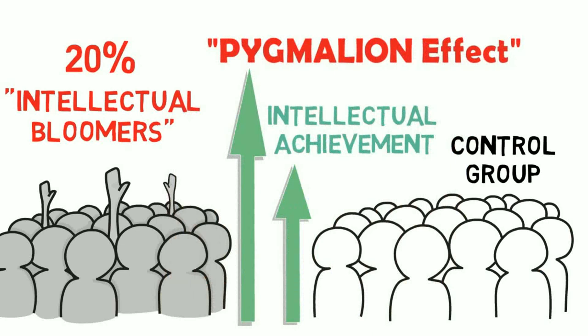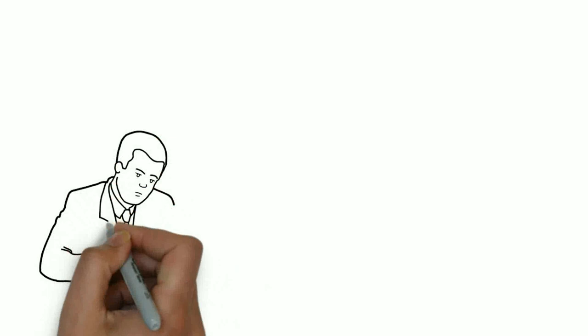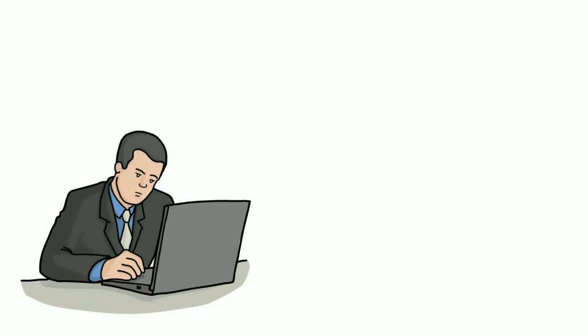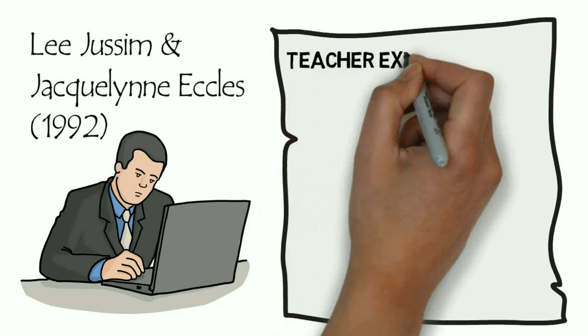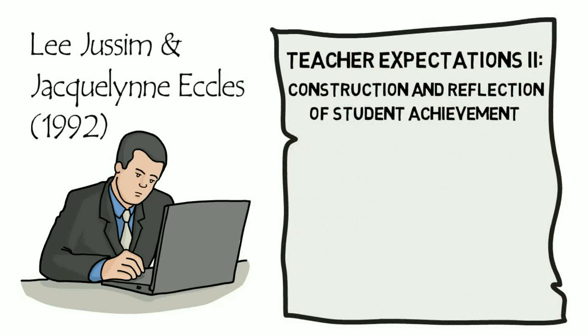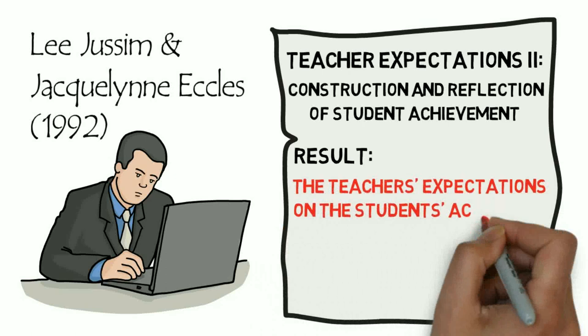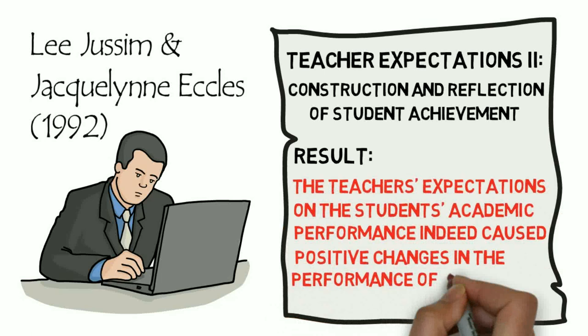In later years, several important studies have been conducted to corroborate Rosenthal and Jacobson's findings. For example, in 1992, Lee Josem and Jacqueline Eccles published their seminal work titled Teacher Expectations II: Construction and Reflection of Student Achievement. In this study, Josem and Eccles examined the effect of mathematics teachers' expectancies on the achievement of their sixth-grade students. In line with the Pygmalion Effect, or self-fulfilling prophecy hypothesis, the teacher's expectations indeed caused positive changes in the mathematics performance of the sixth-grade students.